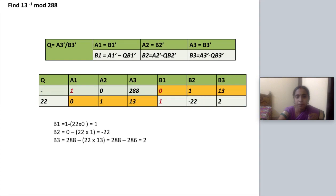Next step, we are trying to find the value for second row. For second row Q is A3 dash divided by B3 dash. Previous A3 value is 288 divided by B3 value is 13. 288 divided by 13 you will be getting 22. Then you have to write the value for A1, A2 and A3. You have to copy it from the previous rows B1, B2 and B3. So 0, 1, 13 I am copying it here.